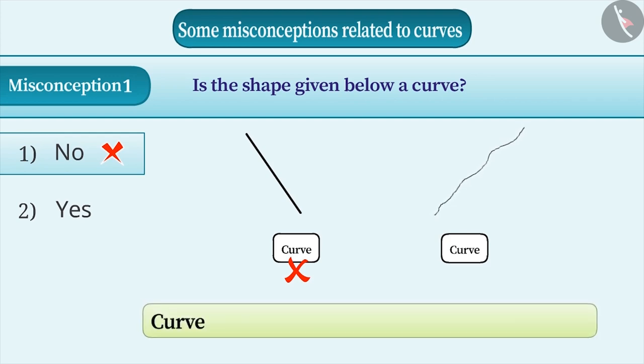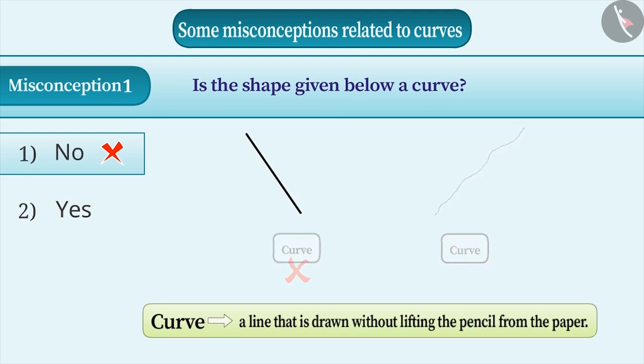When we learn the definition of a curve, we learn that any line that can be made without picking up the pencil from the paper is called a curve. A straight line which is drawn on paper without picking up the pencil is also a curve.